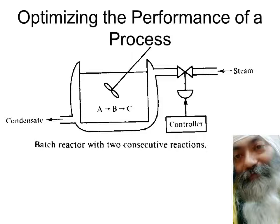For this, let us take a reactor where you have the feed or the reactants getting in and the reaction takes place. It's an endothermic reaction, so A is getting converted to B. Since it's an endothermic reaction, it requires some inflow of heat, and heat is coming in the form of steam. The amount of heat that should go into the jacket to convert A to B is controlled by the controller. This is the objective of the controller.